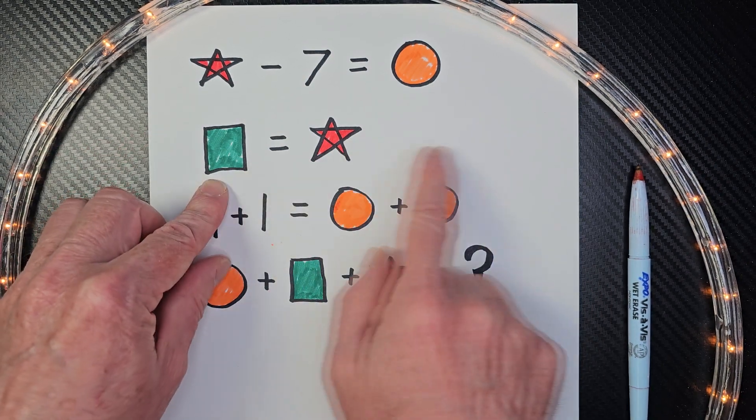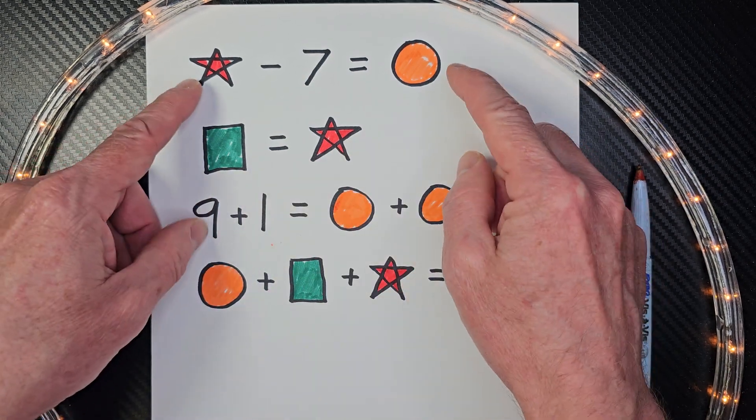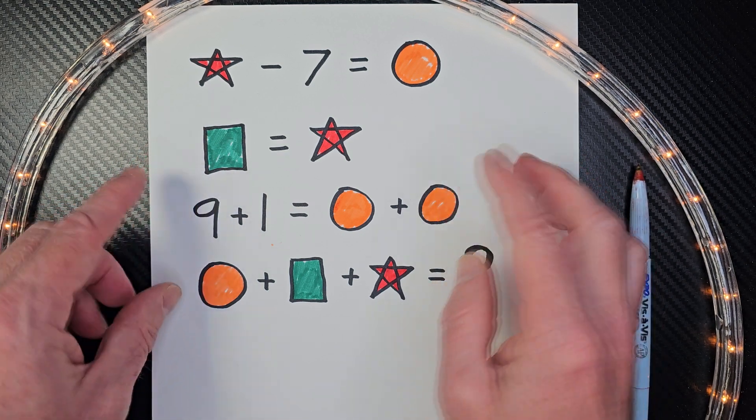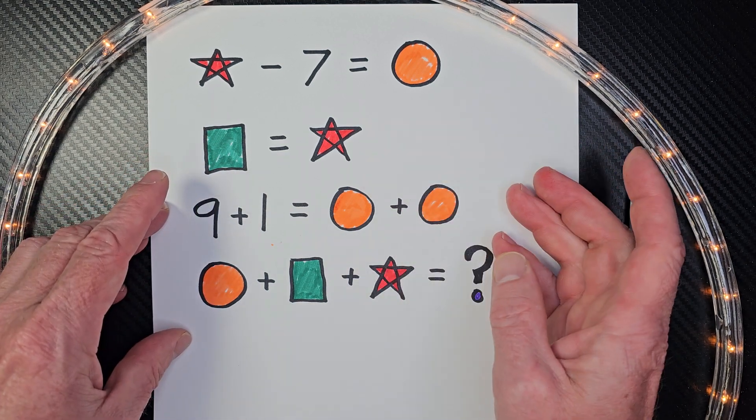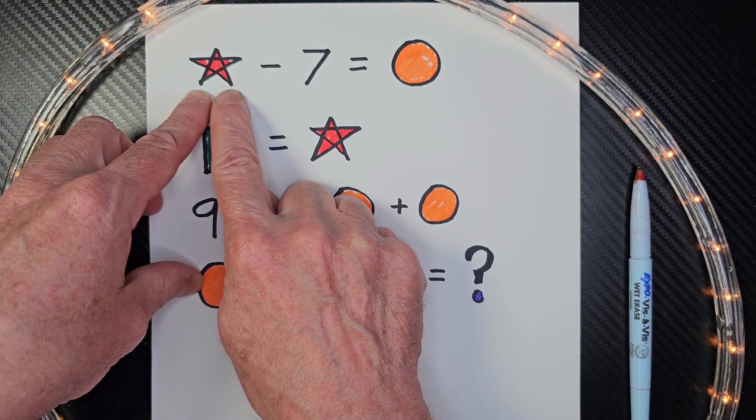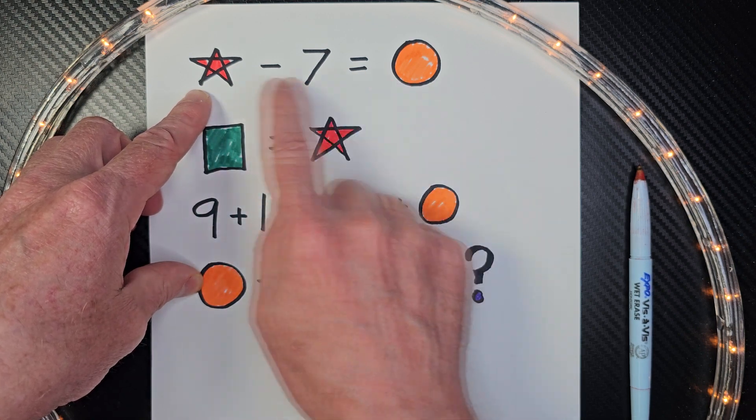What I like to do first is take a look at each line to see which one I might want to solve first and if it has any information. This one right here I think would have too many variables. If I put 10 in there, 10 minus 7 would be 3 here, or if I did 15 minus 7 it would be 8. Can't solve this one.